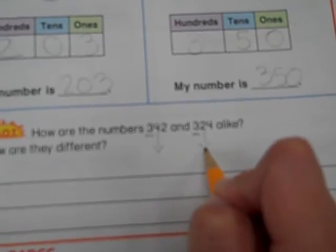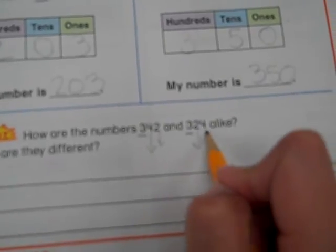Now for the hot topic question, how are the numbers 342 and 324 alike, and how are they different? Let's compare the numbers in their place value. They both have a 3 in the hundreds place. They're both three digits long. But besides that, there's not much more that's the same and different. This number has a 4 in the tens place. This number has a 2 in the tens place. This number has a 2 in the ones place. And this number has a 4 in the ones place. Those are the types of answers I would like to see written for your higher order thinking answer.